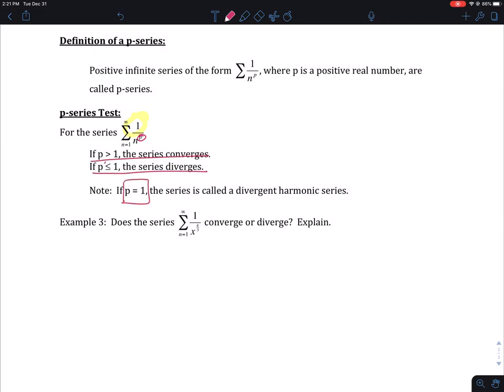If it's equal to one, the series is called a divergent harmonic series, which has an application for physics. Okay, so here I look at my exponent. Does it converge or diverge? Well, four-thirds is greater than one. So that means convergent. So that means that this series, n is equal to one to infinity, one over x to the four-thirds power converges by the p-series test.